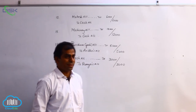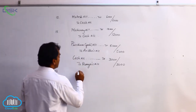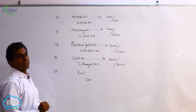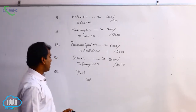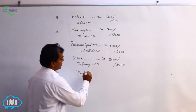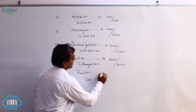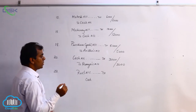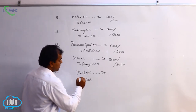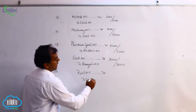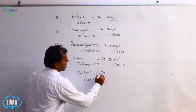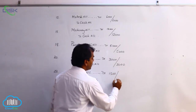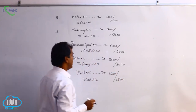The transaction on the 22nd is rent paid. The two accounts involved are rent and cash. Rent is an expense and a nominal account; the rule of nominal account is debit all expenses and losses, so rent account is debited. Cash is a real account, and cash is going out, so we credit cash. The journal entry is rent account debit to cash, the amount being 1500, and the narration is being rent paid.